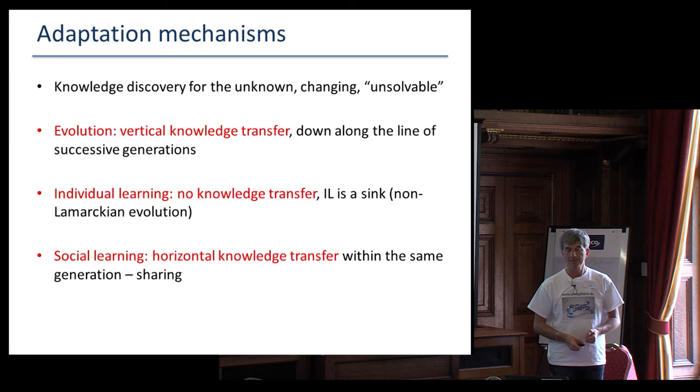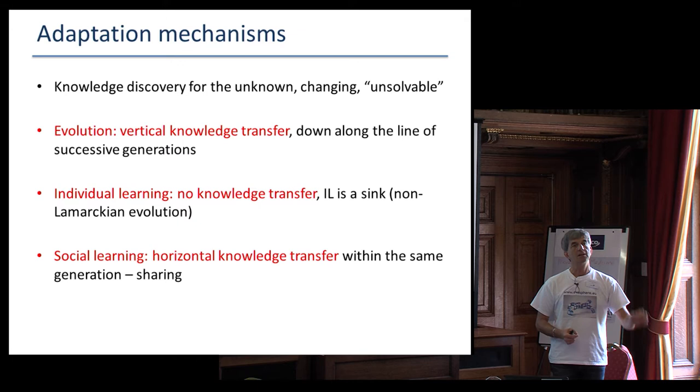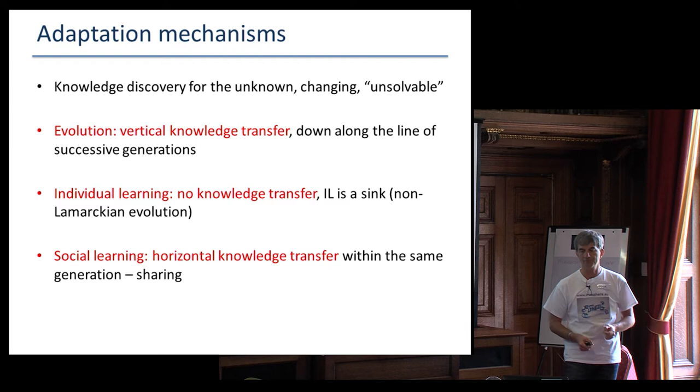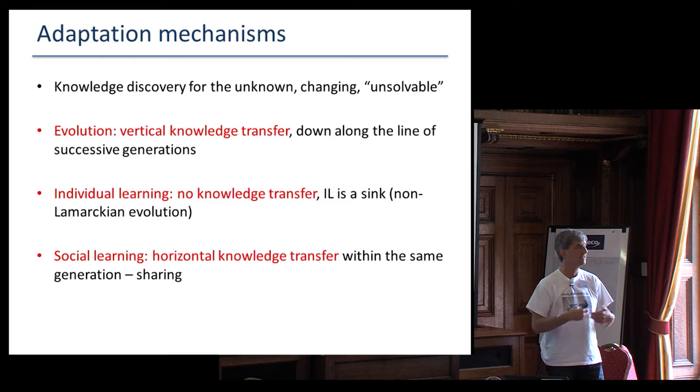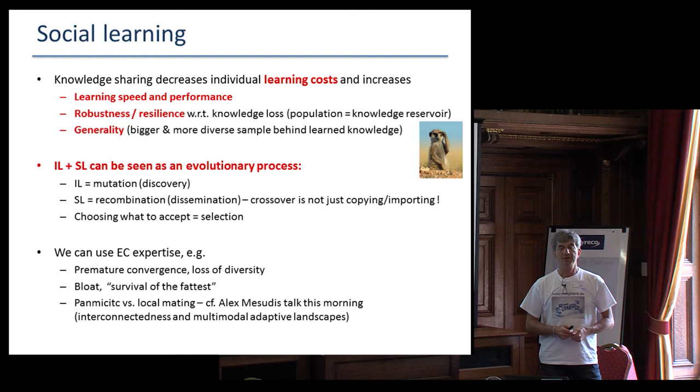Adaptation, the role of adaptation in any system is to discover useful traits, knowledge for unknown situations, situations that were unknown at the time of the design of the system or changing situations or unsolvable situations for which a solution is too hard to develop by the classic analytic means based on mathematics or reasoning. And then we have evolution, which is vertical knowledge transfer done in the chain of generations from father to son or from mother to daughter. Individual learning, there is no knowledge transfer. So an individual learns something, the individual will have a better behavior, survive longer, eat more, whatever is necessary. But then this is a sink. If the individual dies, that knowledge dies with the individual.